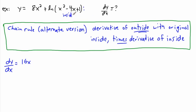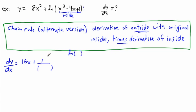The inside function is x squared minus 4x plus 1, and the outside function is the natural log. The derivative of ln of some junk is just 1 over that junk — because the derivative of ln(x) is 1/x. So the derivative of ln of junk is 1 over junk.